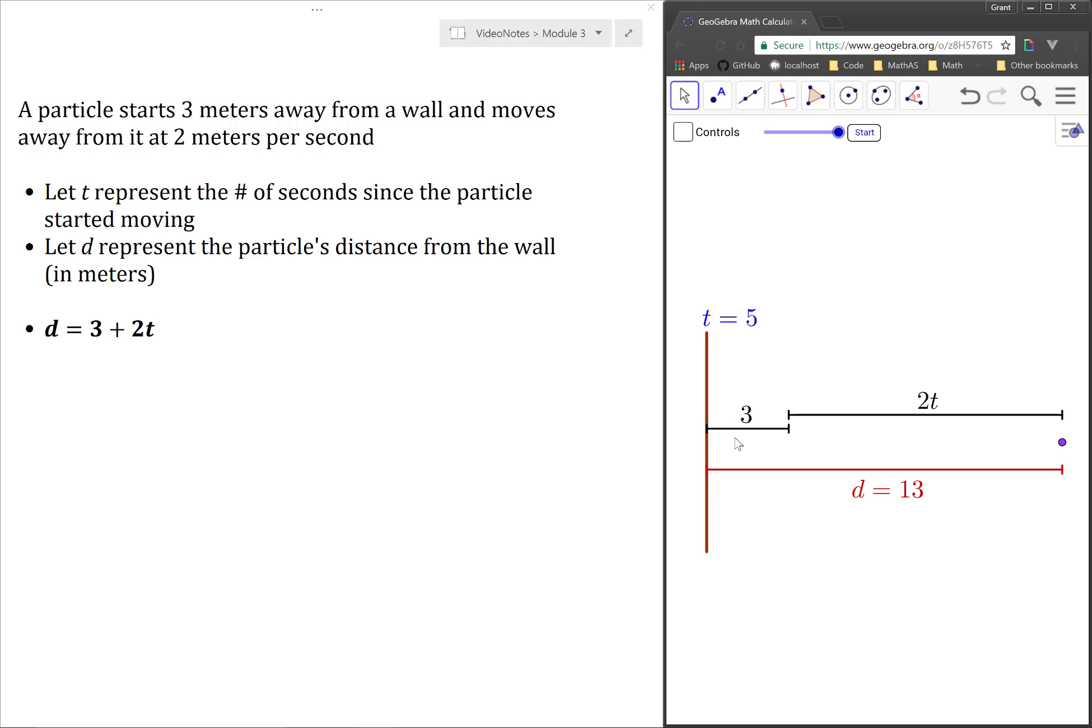We can also use a segment to represent the distance the particle has traveled since it began moving. And since the particle moves at a constant speed of 2 meters per second, the expression 2t represents this distance the particle has traveled since it began moving.